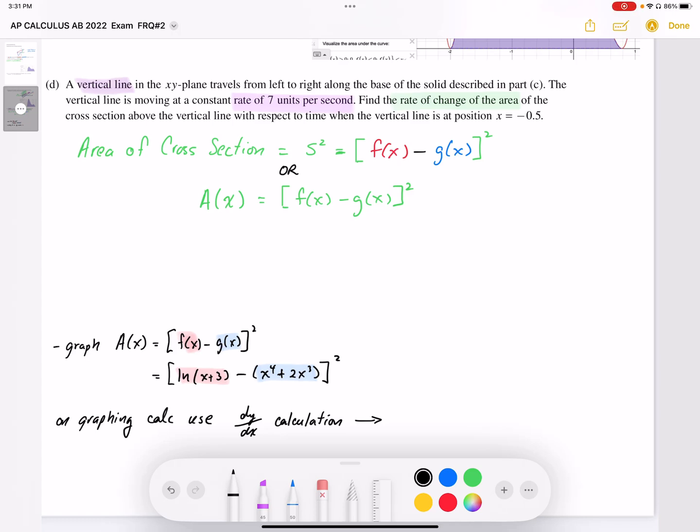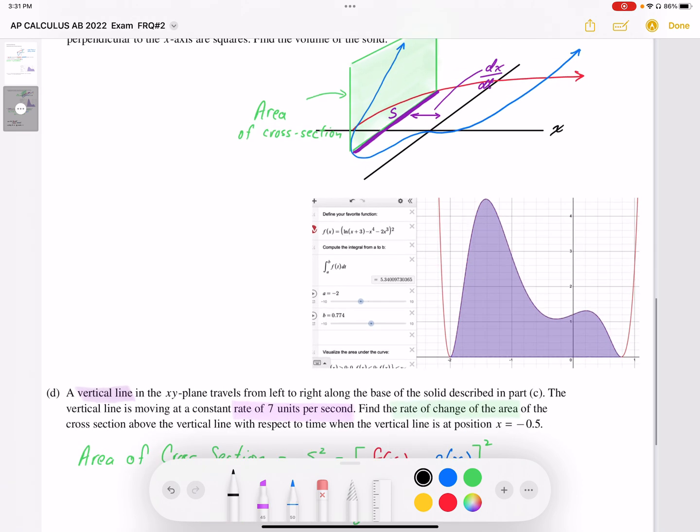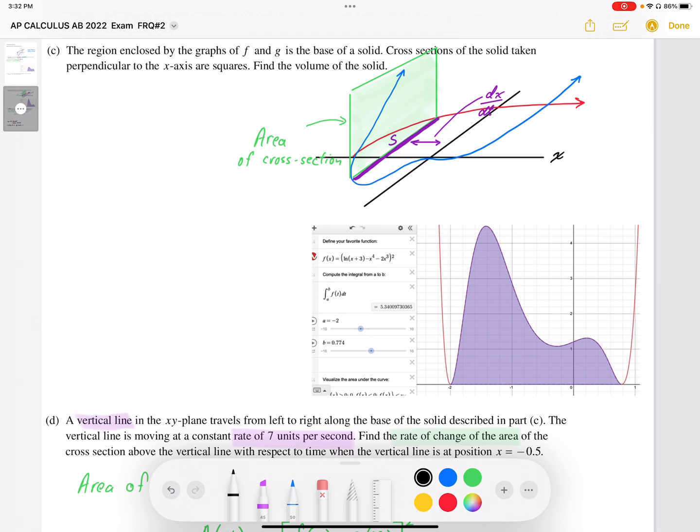We have the vertical line in the xy plane travels from left to right along the base of solid described in Part C. So what we have here is that purple line, the vertical line that describes the base of the solid, which gives us a green cross-sectional square.